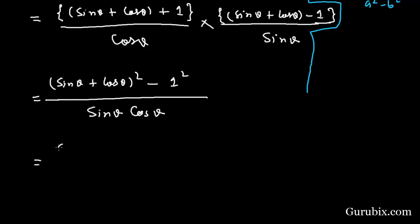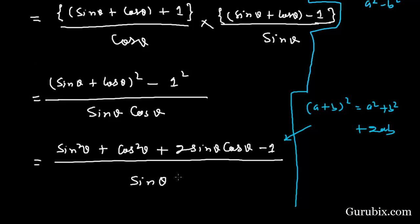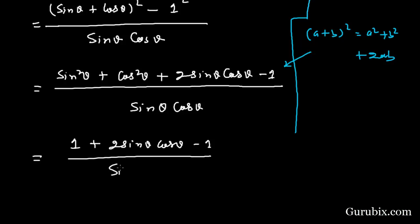Expanding (sin θ + cos θ)² using (a + b)² = a² + 2ab + b² gives sin²θ + cos²θ + 2 sin θ cos θ. Subtracting 1 gives sin²θ + cos²θ + 2 sin θ cos θ - 1, over sin θ cos θ. Since sin²θ + cos²θ = 1, this becomes 1 + 2 sin θ cos θ - 1, over sin θ cos θ.